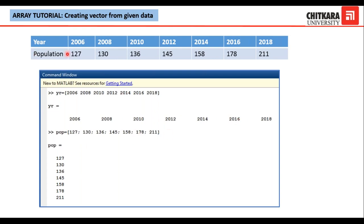Similarly, to display population as a column vector, I assign the variable POP. Writing 127, then semicolons between elements: 127, semicolon, 130, semicolon, 136, semicolon, 145, and so on, the last element being 211, closed with a square bracket. When I press Enter, this gives the display as a column vector. For a row vector, commas can also be used in place of spaces, giving the same display. Likewise, pressing Enter after every element instead of a semicolon also produces a column vector.